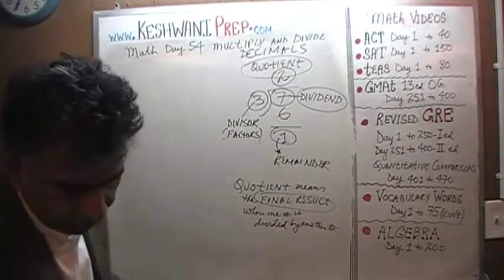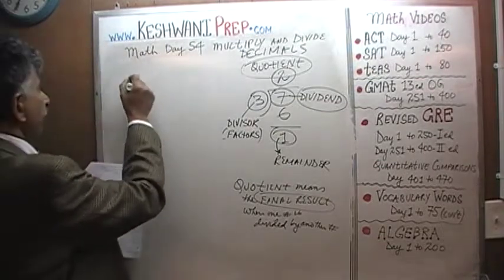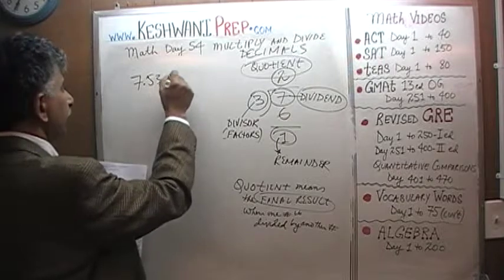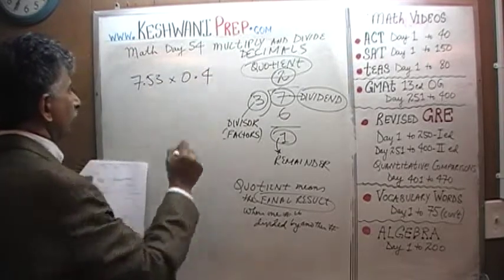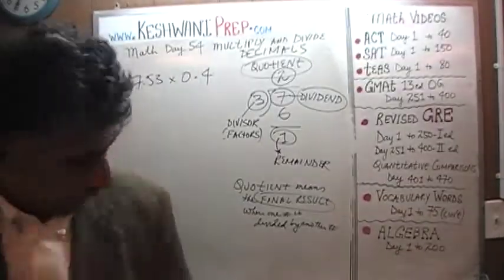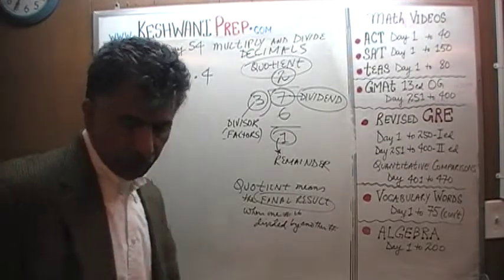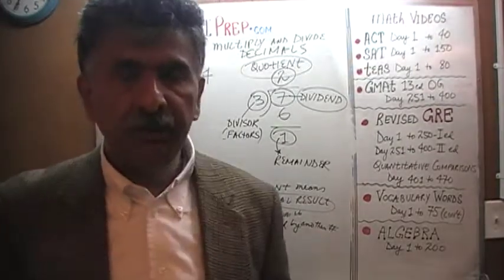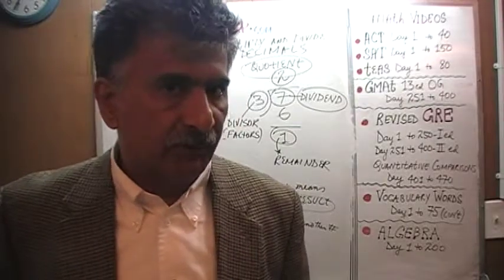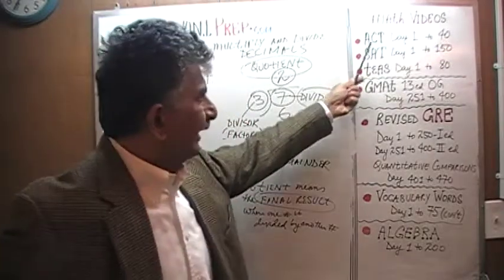Let's look at the first example. The first one we have is 7.53 times 0.4. Now listen very carefully, pay attention here. The exams that you are preparing for, presumably, is one of these tests: SAT, GMAT, or GRE, or something similar.